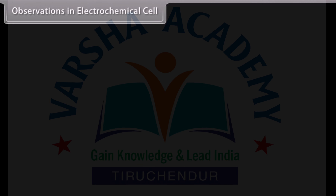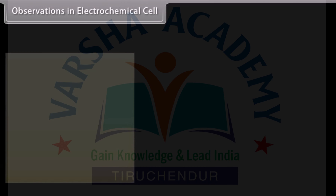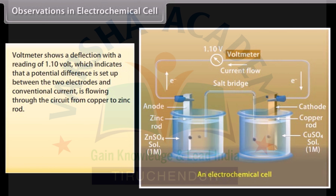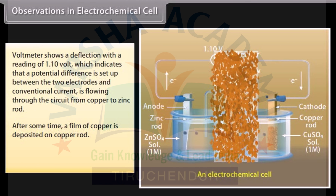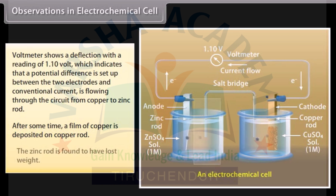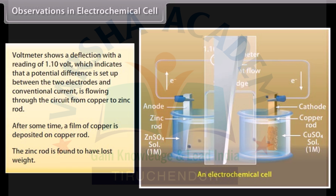Observations in the electrochemical cell: The voltmeter shows a deflection with a reading of 1.10 volt, indicating that a potential difference is set up between the two electrodes, and conventional current flows from copper to zinc rod. After some time, a film of copper is deposited on the copper rod, and the zinc rod is found to have lost weight.